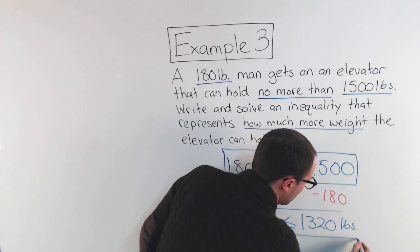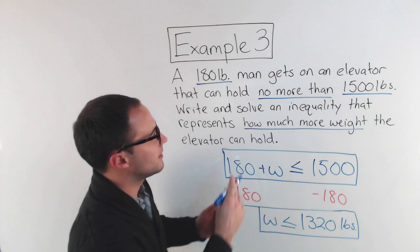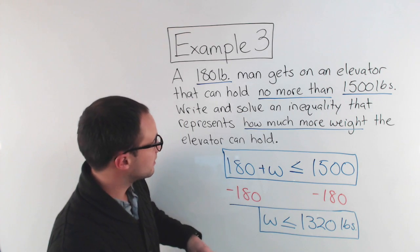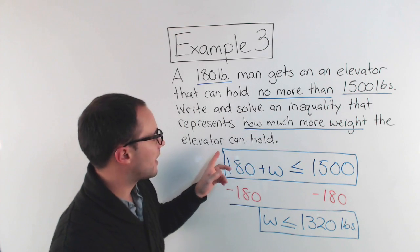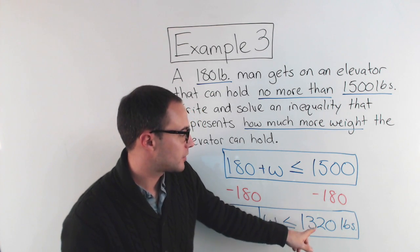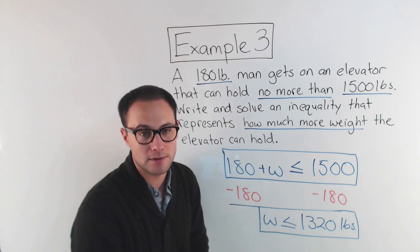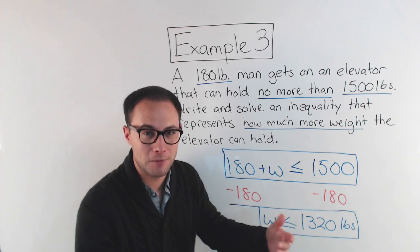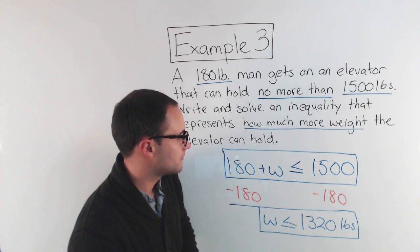So if we think, well, what does that mean in this problem? That means how much more weight can the elevator hold? The elevator can hold no more than 1,320 pounds. That's the maximum amount of more weight it can hold.